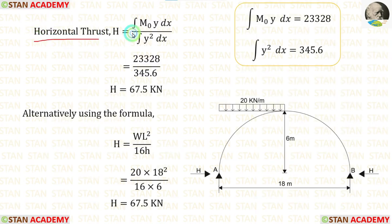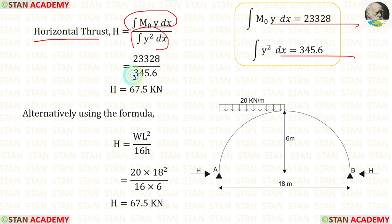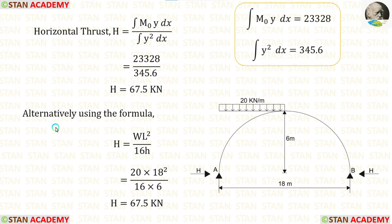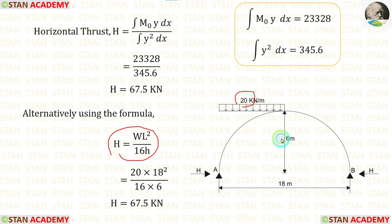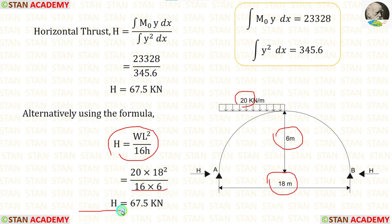With the numerator and denominator calculated, H = 23,328 / 345.6 = 67.5 kN. Alternatively, using the formula H = wl²/(16h) with w = 20, l = 18, and h = 6 also gives the horizontal thrust H = 67.5 kN.